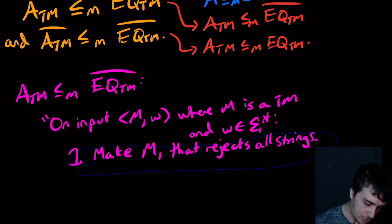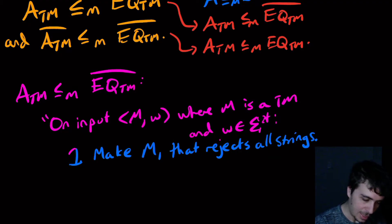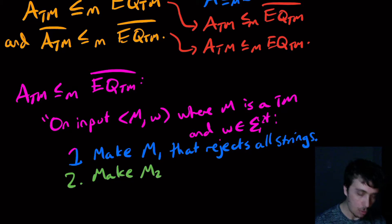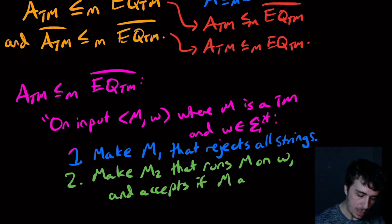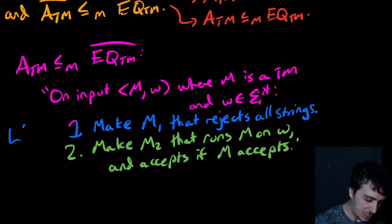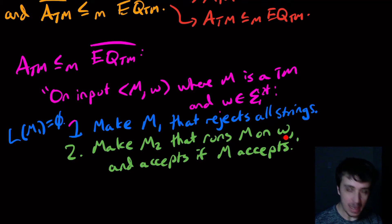As the first step, we construct a Turing machine M1 that rejects all strings. Then for step two, we construct M2 that runs M on w and accepts if M accepts.